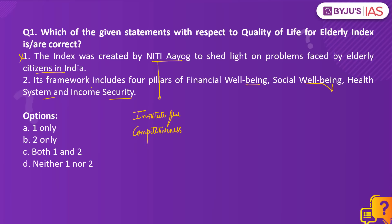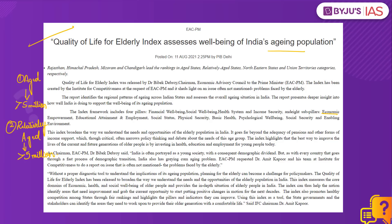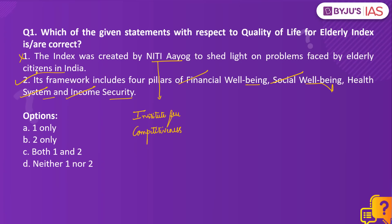The index framework includes four pillars — financial well-being, social well-being, health system, and income security — as well as eight sub-pillars: economic empowerment, educational attainment and employment, social status, physical security, basic health, psychological well-being, social security, and enabling environment. So there are four pillars and eight sub-pillars to this index, making statement number two correct.